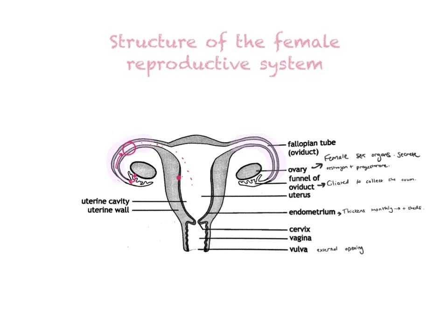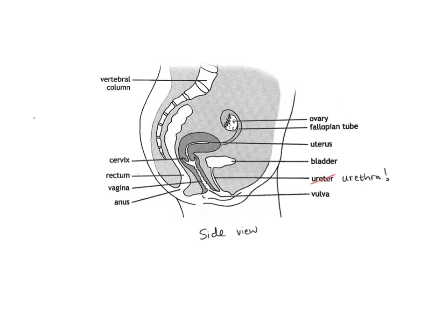We're now going to look at the female reproductive system from the side. Looking at the side view, the bladder is at the front — this is anterior. That's why you can feel your bladder when it's full if you push into your lower ab area. Leading out from the bladder is a tube, and though your textbook may label it 'ureta,' it has to be the urethra because it is leading to the outside, getting rid of urine from the bladder — please correct that label in your textbook.